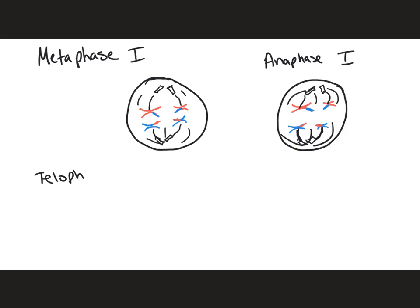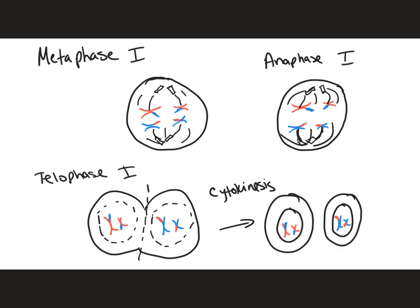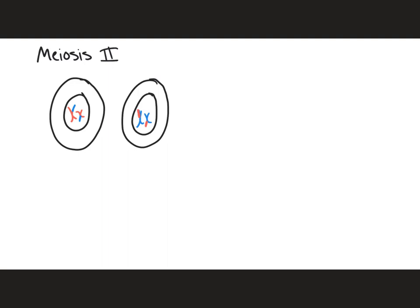In telophase one, the cell is going to eventually split, with those homologous chromosomes separated into each side. Cytokinesis — the division of the cytoplasm — then occurs, resulting in two cells. At this point the cells now have 23 chromosomes and are referred to as haploid cells, or n. You'll also notice the cells do not look identical to one another due to crossing over and the variation in how chromosomes aligned at the metaphase plate.